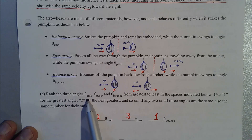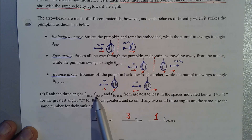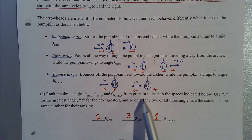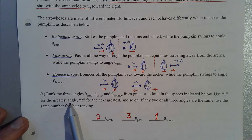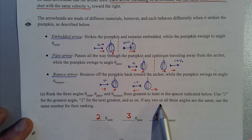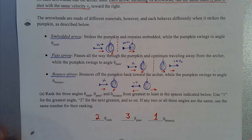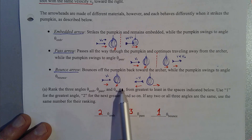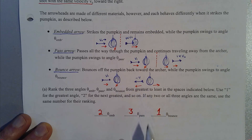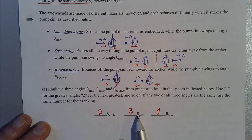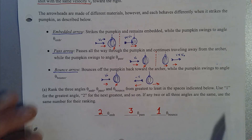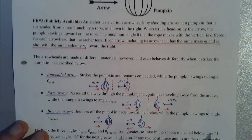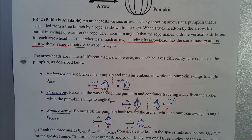Part A asks us to rank the three angles — the angle from the embedded arrow, the angle from the pass-through arrow, and the angle from the bouncing arrow — from greatest to least. Use 1 for the greatest, 2 for the next greatest, and so on. If any two or all three angles are the same, use the same number. The purpose is to rank them and then give a paragraph-length response explaining why. The bounce arrow leads to the largest angle, the embedded arrow the second largest, and the pass-through arrow the smallest.